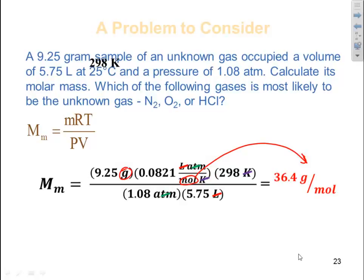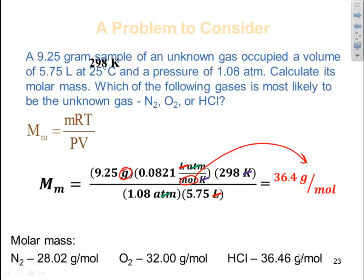Now we want to decide is this going to be N2, O2, or HCl. Well that's just a case of now calculating your molar masses of those three species. Molar mass of nitrogen is 28.02, that's 14.01 twice. Oxygen is 16.00 twice which is 32 grams per mole, and then HCl 1.01 and 35.45, add that up you get 36.46 grams per mole. So which one of these three is the molar mass we calculated closest to? Well the most likely unknown gas in this scenario would be HCl.